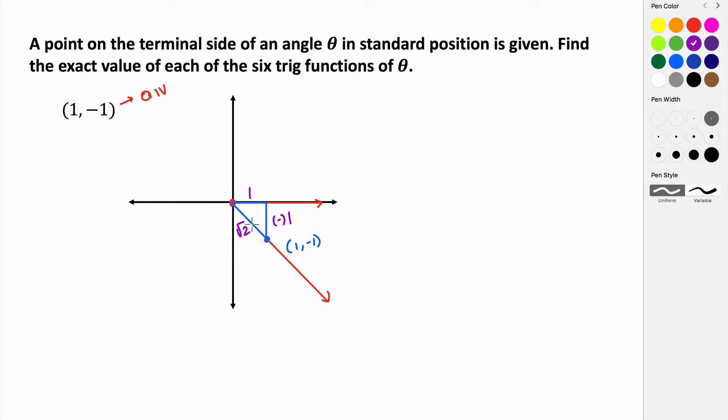So now we can use this information to help us find sine, cosine, tangent, cosecant, secant, and cotangent of our angle θ. So let's go through and do that.